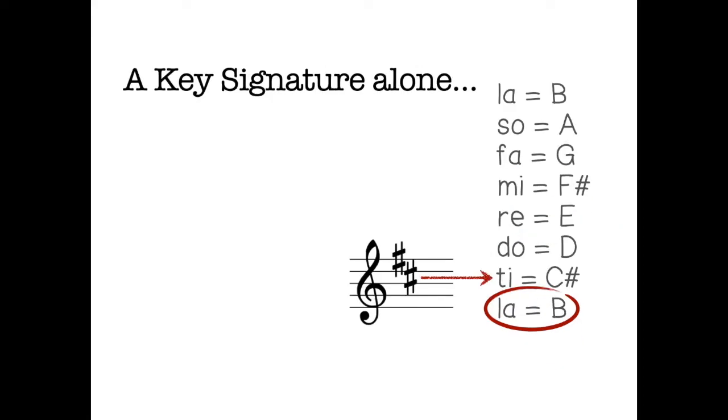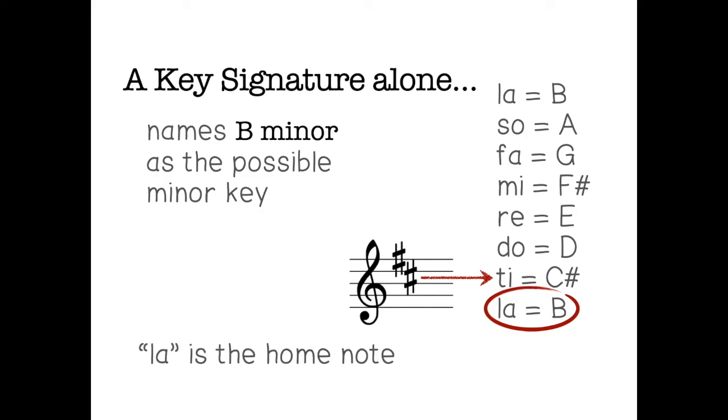If we took that same key signature, but we looked for a minor key, we have to remember the link between the note la and minor keys. So in this case, la would be the letter name B in this key signature. And that means B minor is the possible minor key. So la is the home note. La is a B in this key.